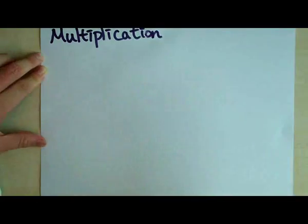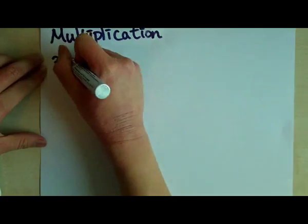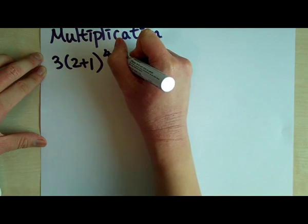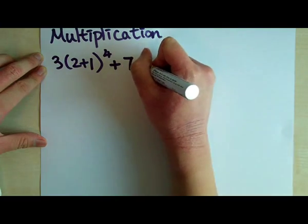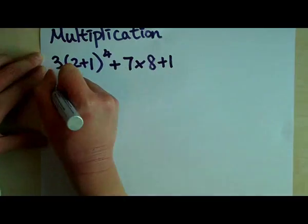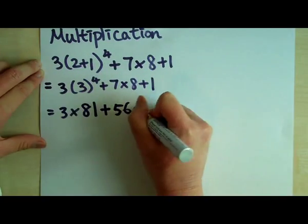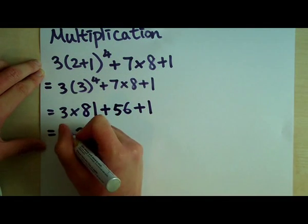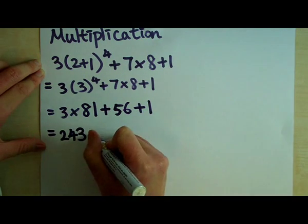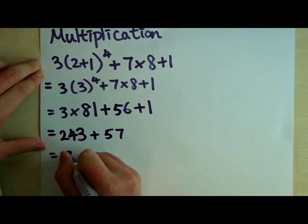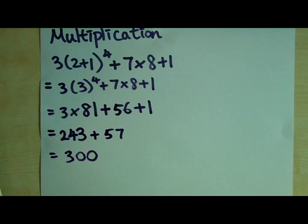Let's move on to multiplication. We will use brackets and powers as well. Here is an example: 3 open bracket 2 plus 1 close bracket to the power 4 plus 7 times 8 plus 1, which equals 3 times 81 plus 56 plus 1. 3 times 81 is 243 and 56 plus 1 is 57. Finally, 243 plus 57 equals 300. You might be wondering why open bracket 2 plus 1 close bracket to the power 4 equals 81 first — well, we learned that we must do what is in the brackets first, then we do powers second. That is the reason why BODMAS exists.